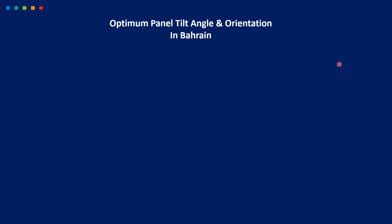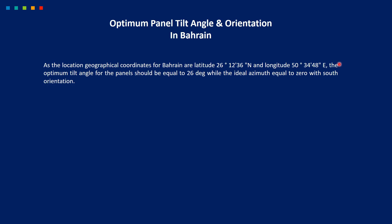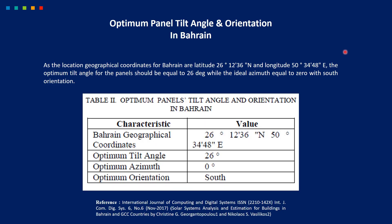Let's see what is the optimal panel tilt angle and orientation for Bahrain. The geographical location coordinates for Bahrain are approximately latitude 26 degrees and longitude 50 degrees. That's why the optimal tilt angle for the solar panel should be equal to 26 degrees, while the ideal azimuth angle should be equal to 0 degrees with south orientation.